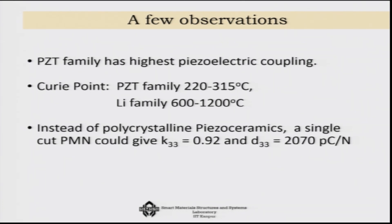The PZT family has the highest piezoelectric coupling. Regarding the Curie point — the temperature beyond which piezoelectric effect is lost due to loss of polarization orientation — PZT family is 220 to 315 degrees centigrade whereas the lithium family is 600 to 1200 degrees centigrade. So even though lithium family shows lower piezoelectric coupling, it is much better for high-temperature applications. Specific single crystals like PMN can achieve K33 as high as 0.92 and D33 of about 2070, but single crystals are generally very brittle and only developed in laboratory settings, not yet commercial.